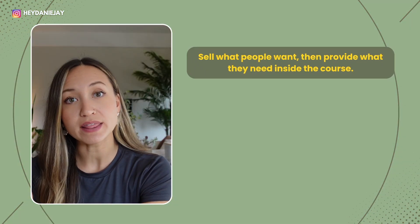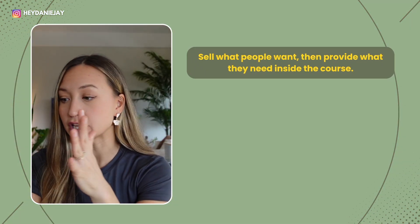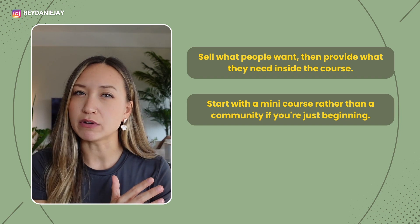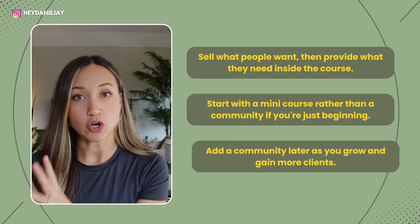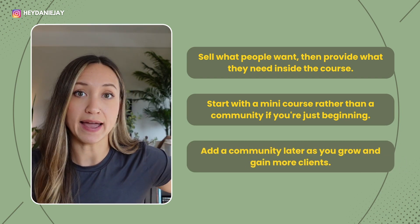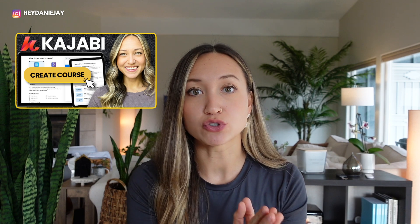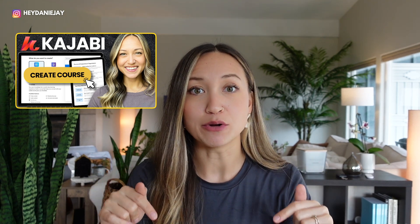We're finally at step four of this quick start Kajabi plan: creating your product. Now that you've got a waitlist and you're building your email list, you're ready to begin building out your course. You have to sell people what they actually want, not necessarily what they need — sell them what they want, and give them what they need on the inside. I recommend starting with a mini course rather than a community, unless you already have a big following. I have a step-by-step tutorial on how to create a course linked below.